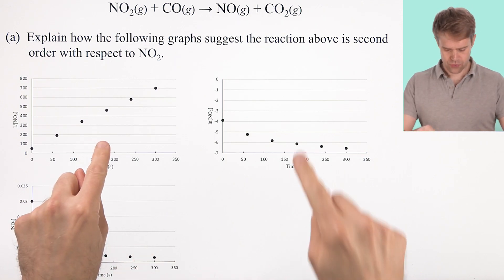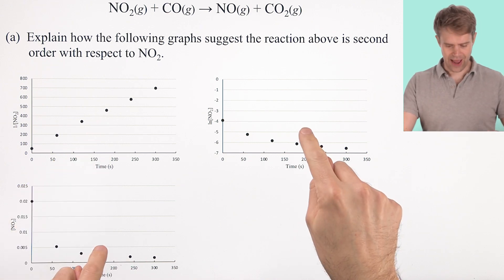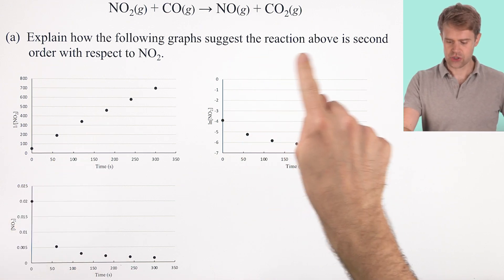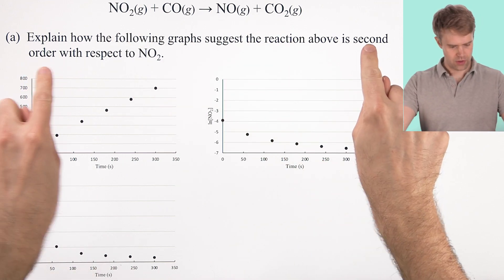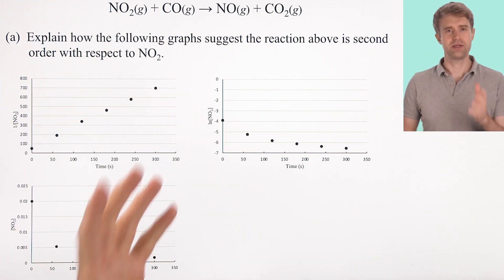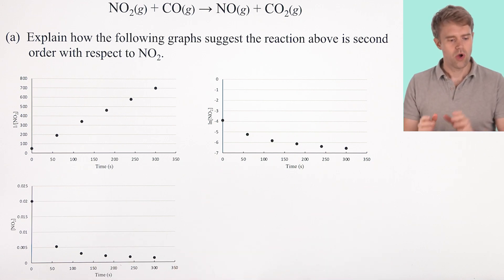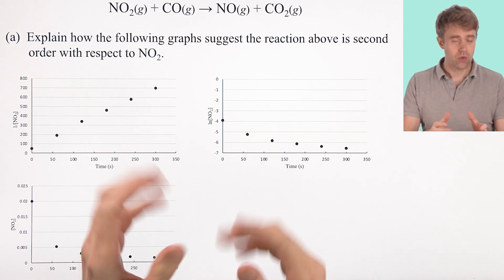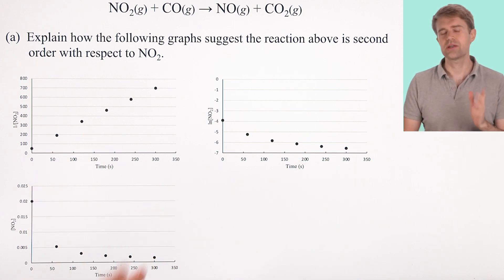Part A shows three graphs and asks you to explain how the graphs suggest the reaction above, that's this one, is second order with respect to NO2. Many kinetics questions on the AP exam will show you different graphs like this and ask you to correlate them with a reaction order or a specific rate law. So if you know the pattern here, this is actually pretty easy.